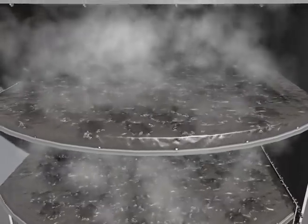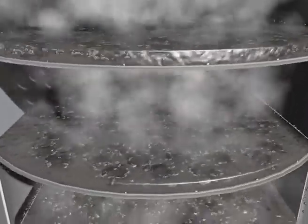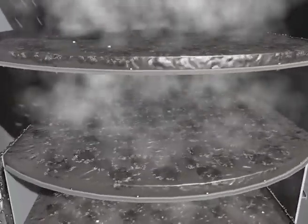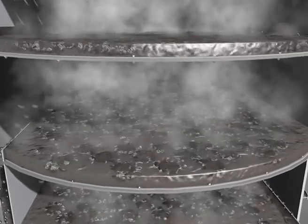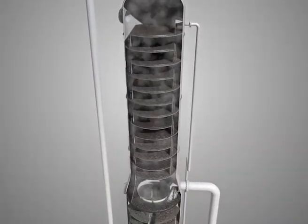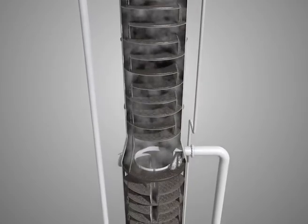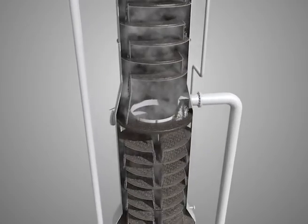In a packed column, the liquid, driven by gravity, flows down the mass transfer zone comprising the random and/or structured packings in the form of a trickle film or falling droplets, while the vapor as the continuous phase flows upwards from the bottom to the top of the column.